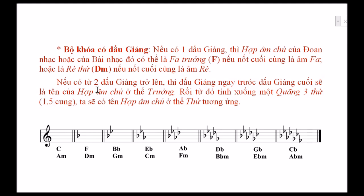Còn nếu có từ hai dấu giáng trở lên, thì dấu giáng ngay trước dấu giáng cuối sẽ là tên của hợp âm chủ ở thể trưởng. Rồi từ đó tính xuống một quãng ba thứ, chúng ta sẽ có tên hợp âm chủ ở thể thứ tương ứng.